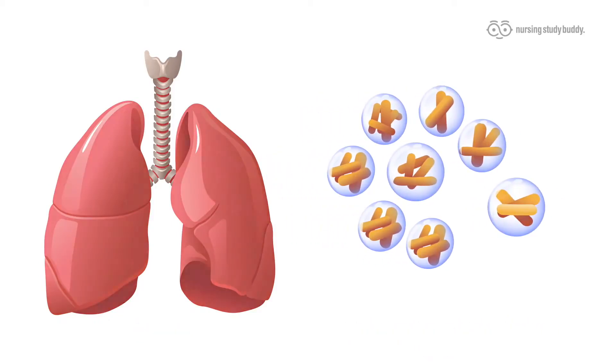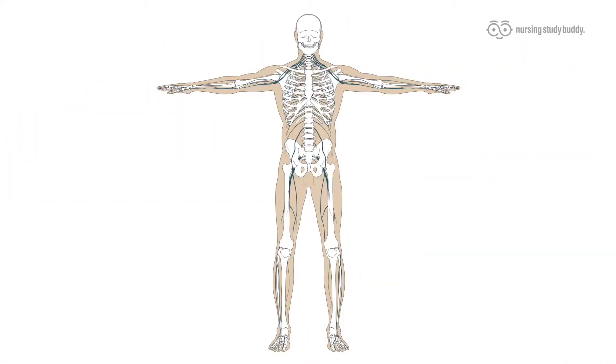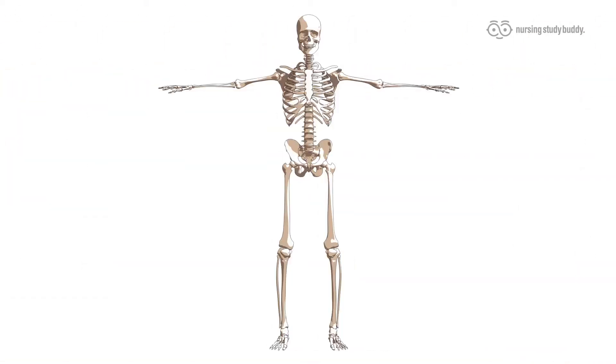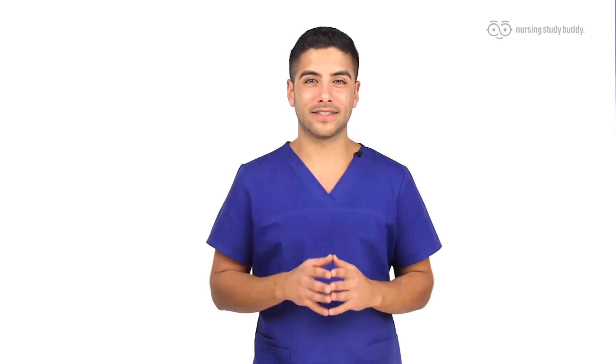Tuberculosis can also affect other parts of the body such as the gastrointestinal system, lymph nodes, nervous system, joints, bones, skin, and the genitourinary tract — the genitals and the urinary organs.